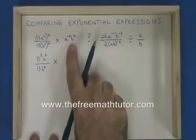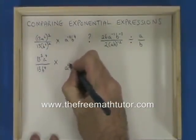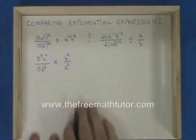In this expression, I'm going to convert a to the negative 4 into a to the positive 4 by moving it down into the denominator. b to the 4 stays in the numerator.